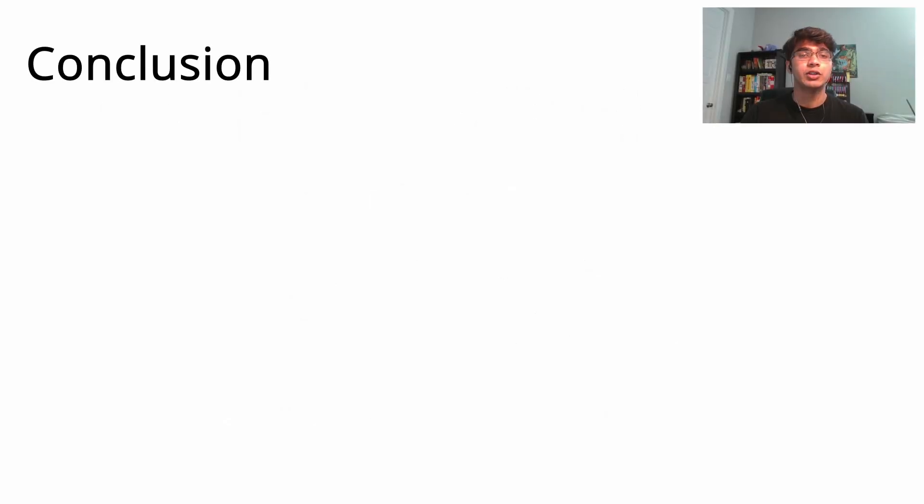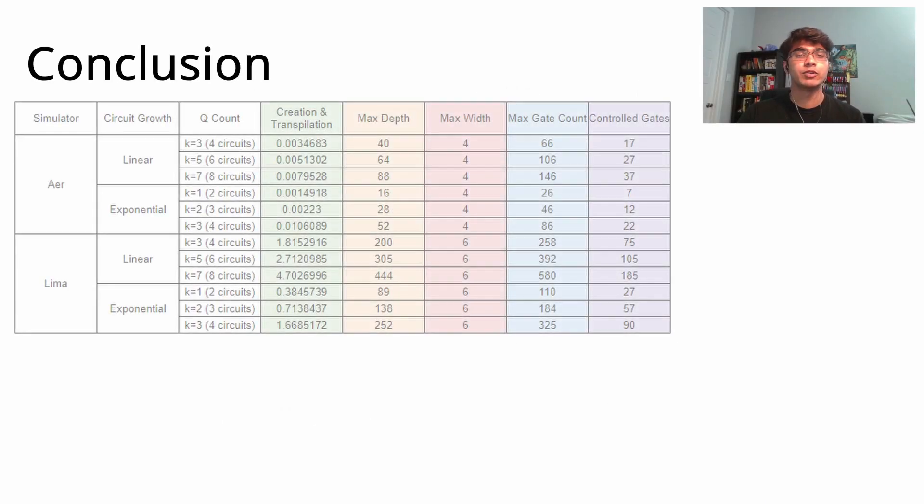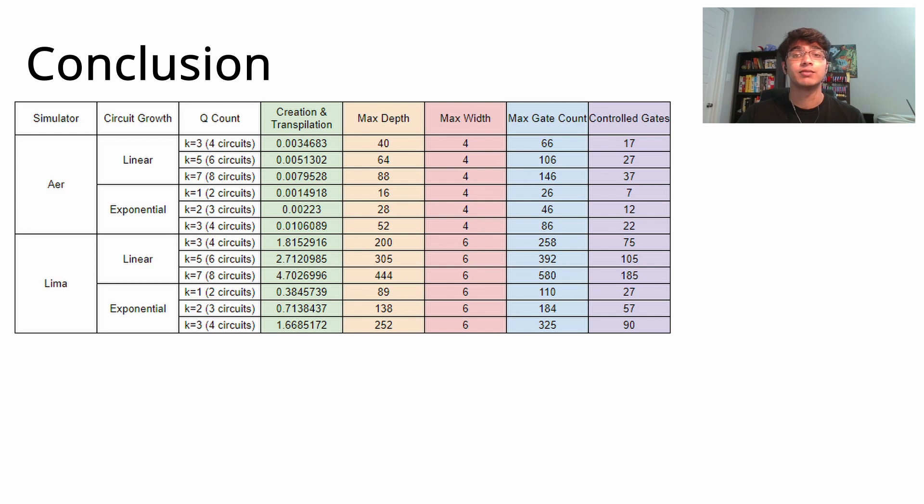In conclusion, we find that the most practical implementation of this algorithm as of right now is the exponential algorithm with a single iteration, as it has a high accuracy and low number of total gates used. However, since we used a classical computer to simulate these results, we were limited in how far we could scale the algorithm up. This means that there could be a linear or exponential implementation with better accuracy, but it just can't be simulated classically.